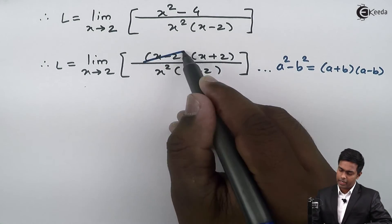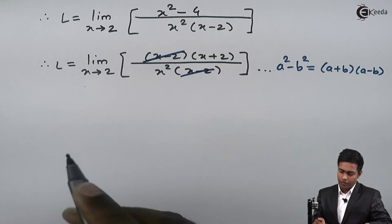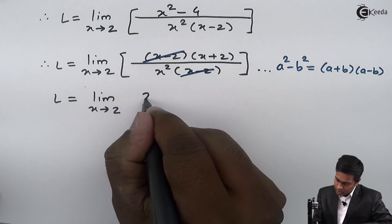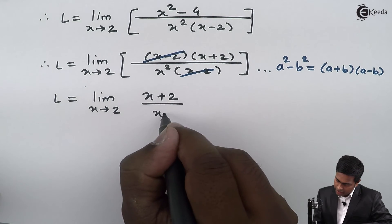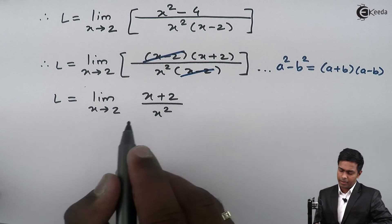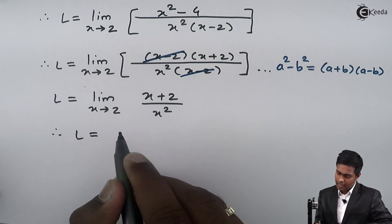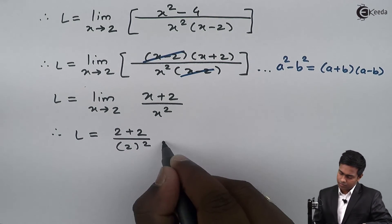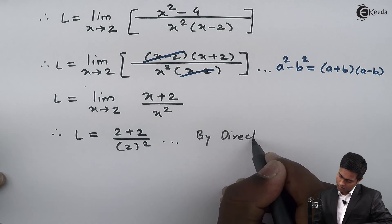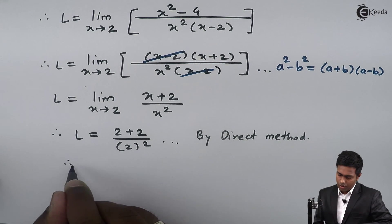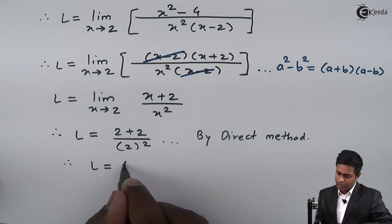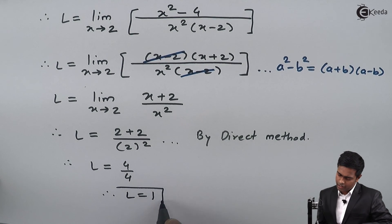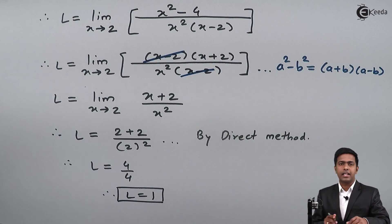By cancelling (x minus 2), we get L equals limit x tends to 2 of (x plus 2) upon x squared. Applying the direct method: L equals (2 plus 2) upon 2 squared, which is 4 upon 4. Cancelling 4 and 4 gives the value of the limit as 1.